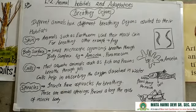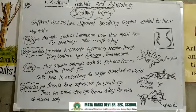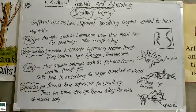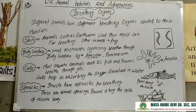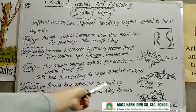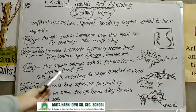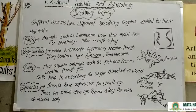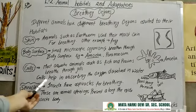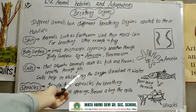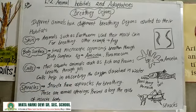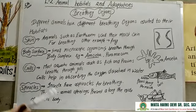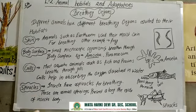Next is gills. Most aquatic animals — that is, animals related to water — such as fish and prawns breathe through gills. Gills help in absorbing the oxygen dissolved in water.